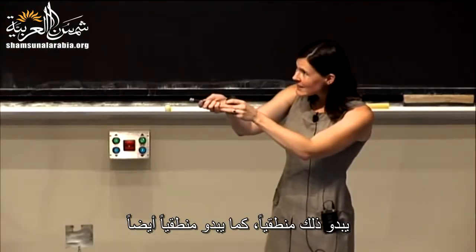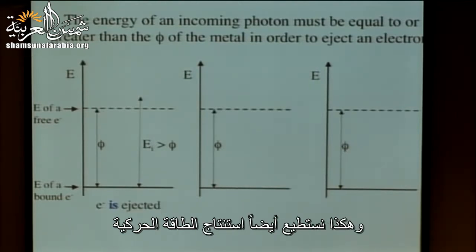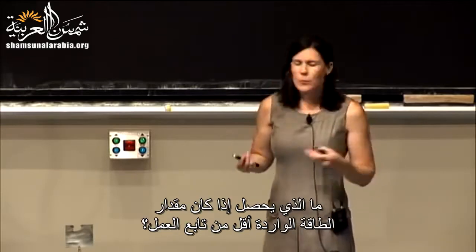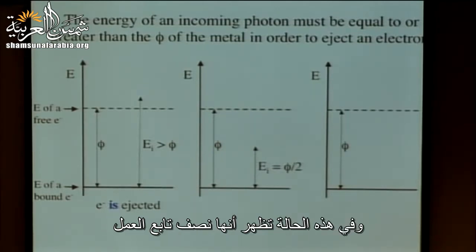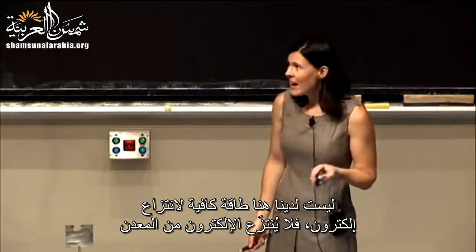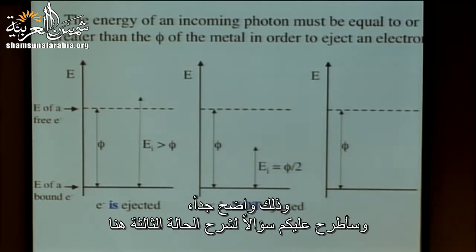The most basic case: when the incident energy is greater than the work function, an electron is ejected. That extra bit of energy goes into the kinetic energy of the electron. In the second case, if the incident energy is less than the work function — say, one half of the work function — we don't have enough energy to eject an electron, so no electron is ejected.